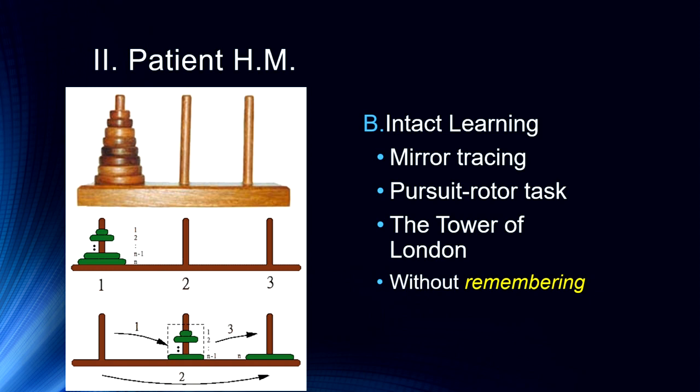This is where we start to get the understanding that there are different types of memory. We have conscious memories — what we call explicit memories, declarative memories, or episodic memories — essentially memories linked to specific times and places where we have a feeling of remembering or a conscious awareness. But there's another type of memory which we don't consciously remember — we don't have conscious awareness of it. That's a really important thing we learned from patient H.M.